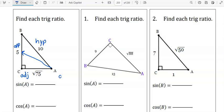Sine is opposite over hypotenuse. That's 5 over 10. You can reduce that to become 1 half.